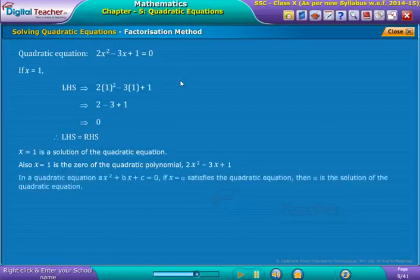In a Quadratic Equation, Ax² plus Bx plus C is equal to 0. If x is equal to Alpha satisfies the Quadratic Equation, then Alpha is the solution of the Quadratic Equation.